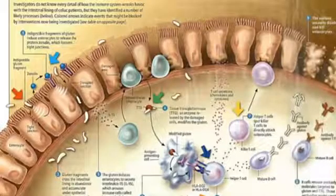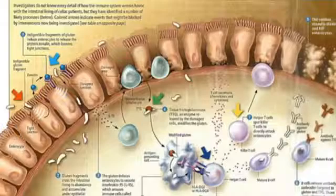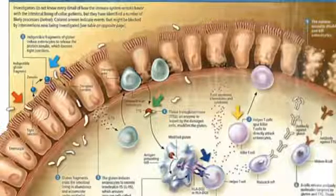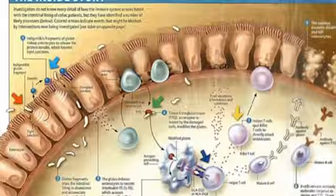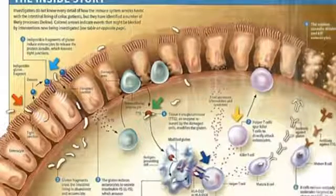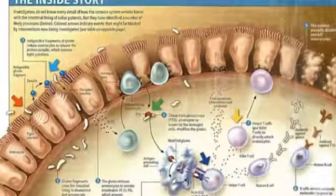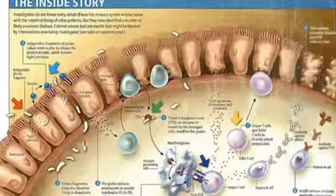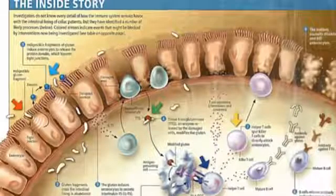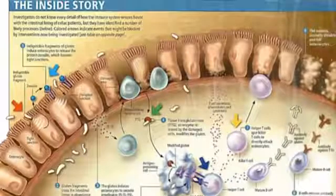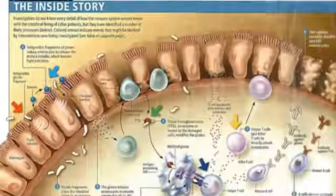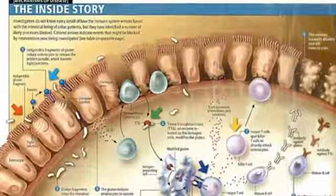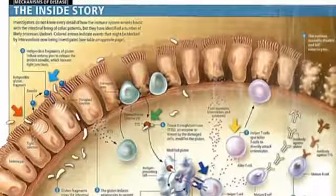The third factor identified in the development of autoimmune conditions — the number three cause of getting sick in the world — is intestinal permeability. Researchers have said you can arrest, meaning stop, the development of autoimmune disease if you heal the gut. That's why intestinal permeability is so important to identify and treat thoroughly — so you stop throwing gasoline on the fire, whether the weak link is in your brain, your blood vessels, or your gallbladder.